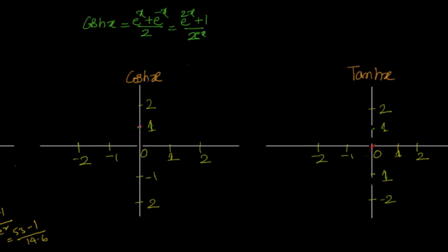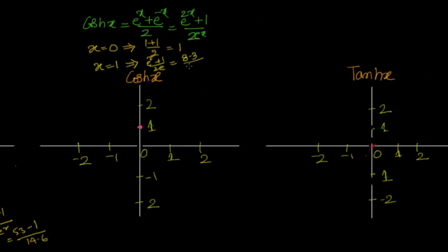Now let us go to hyperbolic cosine. For x equals 0, e^0 is 1, so 1 plus 1 divided by 2 equals 1. So x equals 0, y equals 1. For x equals 1, y equals e^2 plus 1 divided by 2e, which is 7.3 plus 1 equals 8.3 divided by 5.4, giving approximately 1.56. Since cosh is an even function, symmetric about the y-axis, y equals 1.56 for both x equals 1 and x equals minus 1.